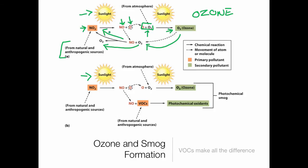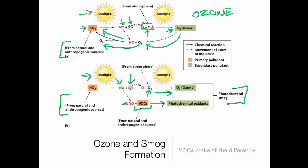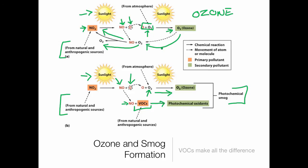Now let's take the same reaction, this time in the presence of VOCs, and talk about how that impacts things. Just like before, we start out with our nitrogen dioxide. Sunlight causes that to break down into nitrogen oxide and a free oxygen atom. That free oxygen atom then combines with naturally occurring O2, forming O3 ozone. But when we have VOCs present, we can't loop things back around because VOCs get in the way of this process. Our nitrogen oxide comes down and combines with the VOCs, forming photochemical oxidants. Ozone and photochemical oxidants together give us photochemical smog. Make sure you go through these diagrams well enough that you understand them and can talk about them if need be.